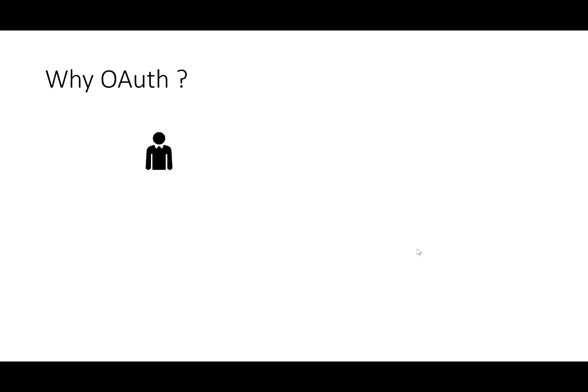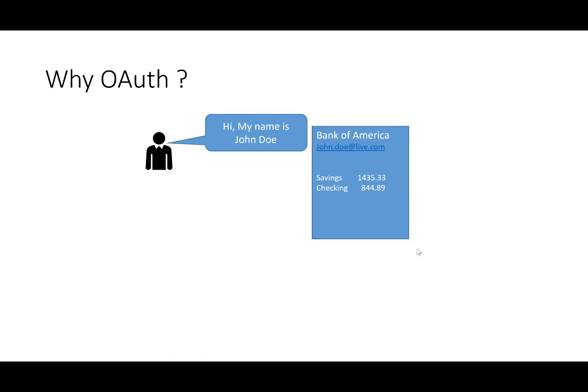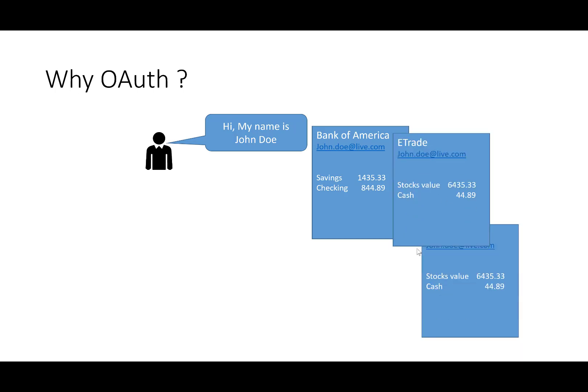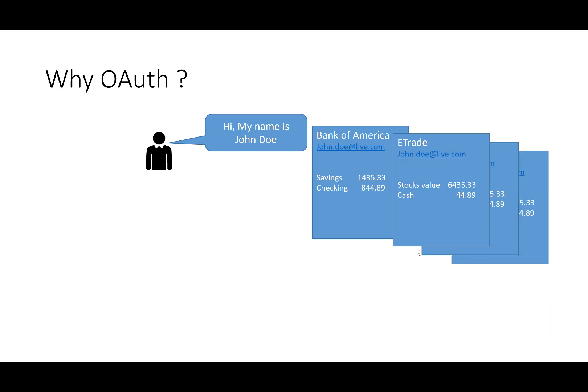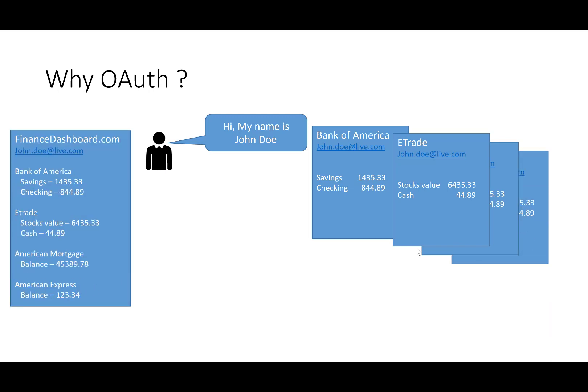To better understand the concept of OAuth, let's look at this fictitious example. Consider John Doe, who is a fictitious character. He has both a checking and a savings account with Bank of America. In addition, John Doe also has accounts with various other financial institutions. There is also a fictitious company called FinanceDashboard.com, a third-party vendor that provides John Doe with a consolidated dashboard of all his account statements.